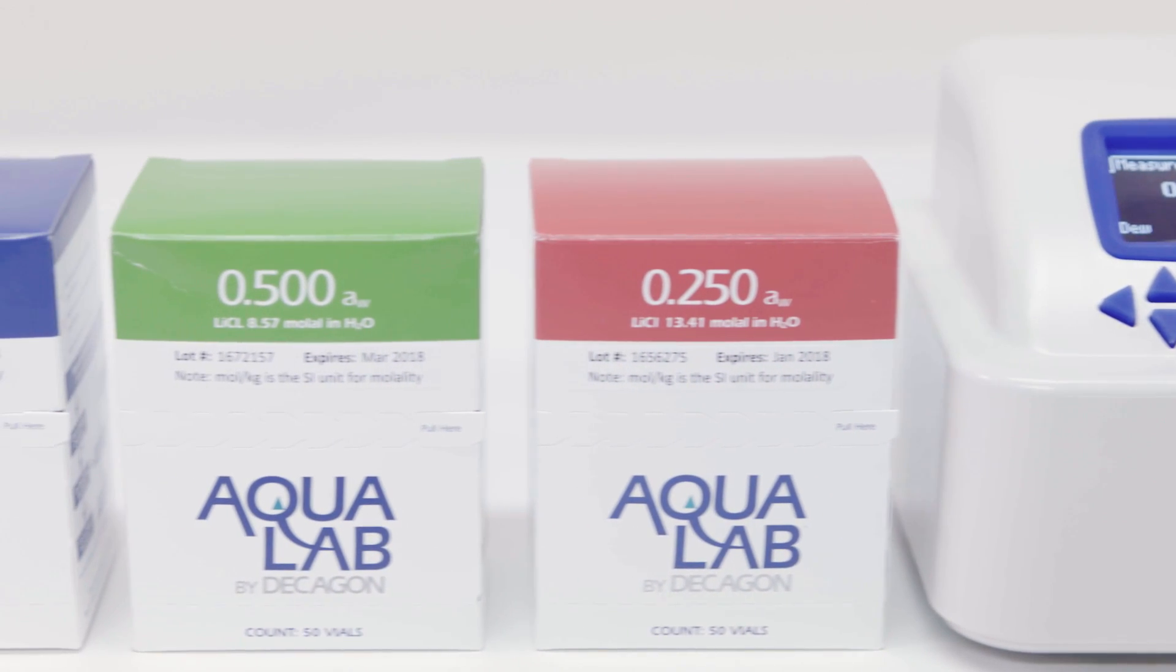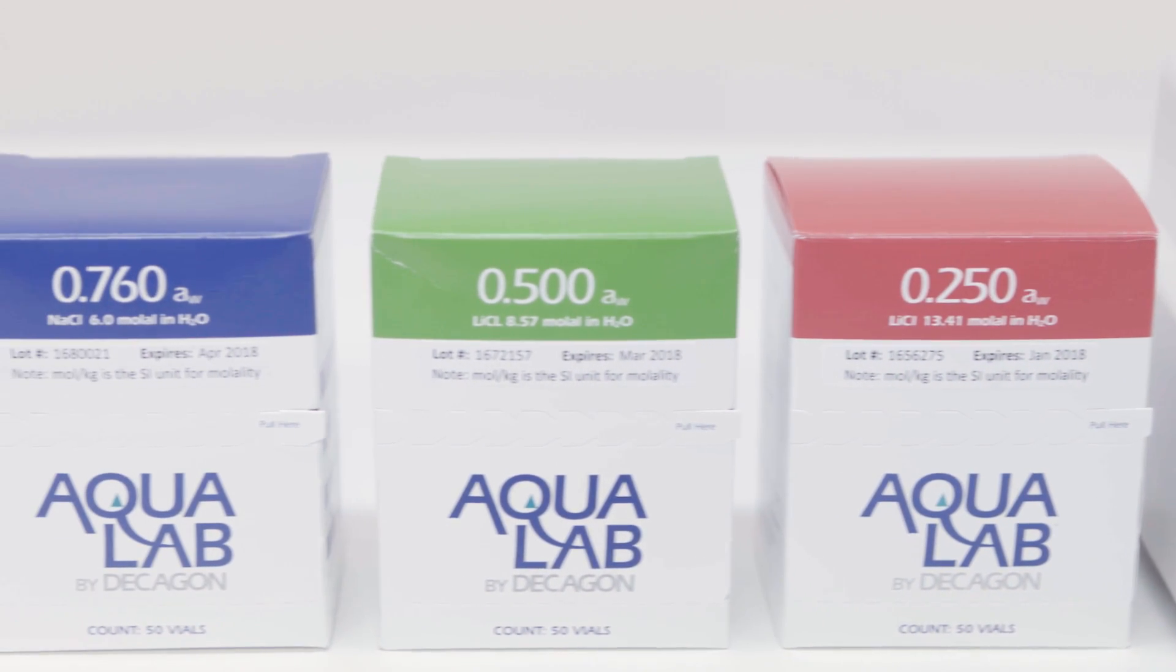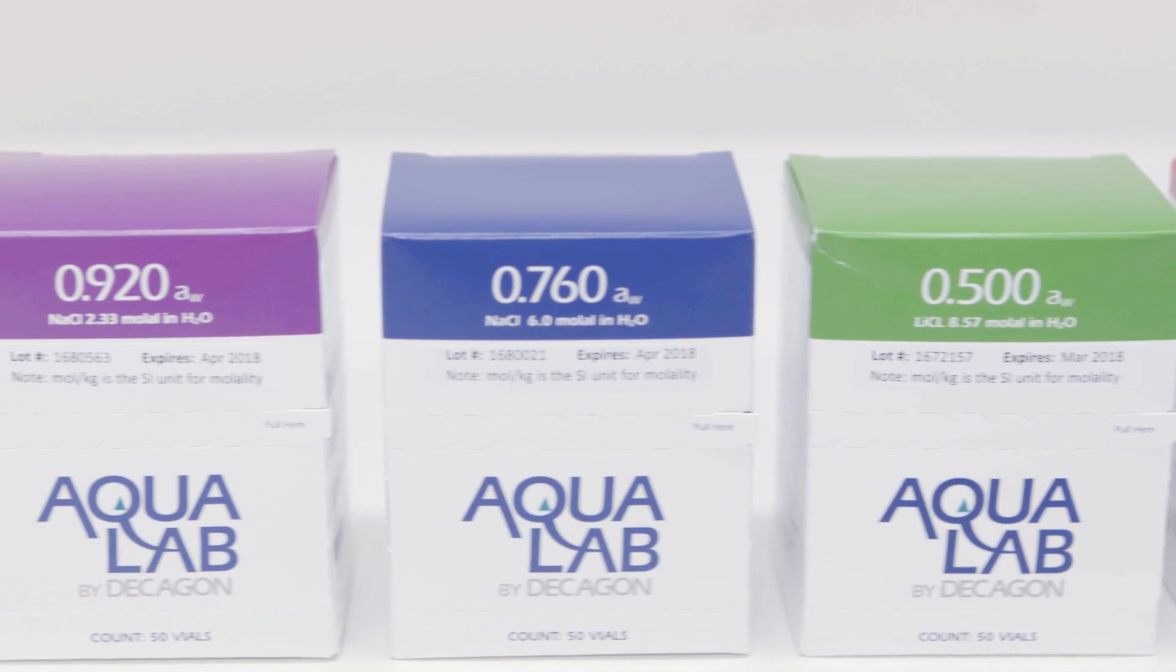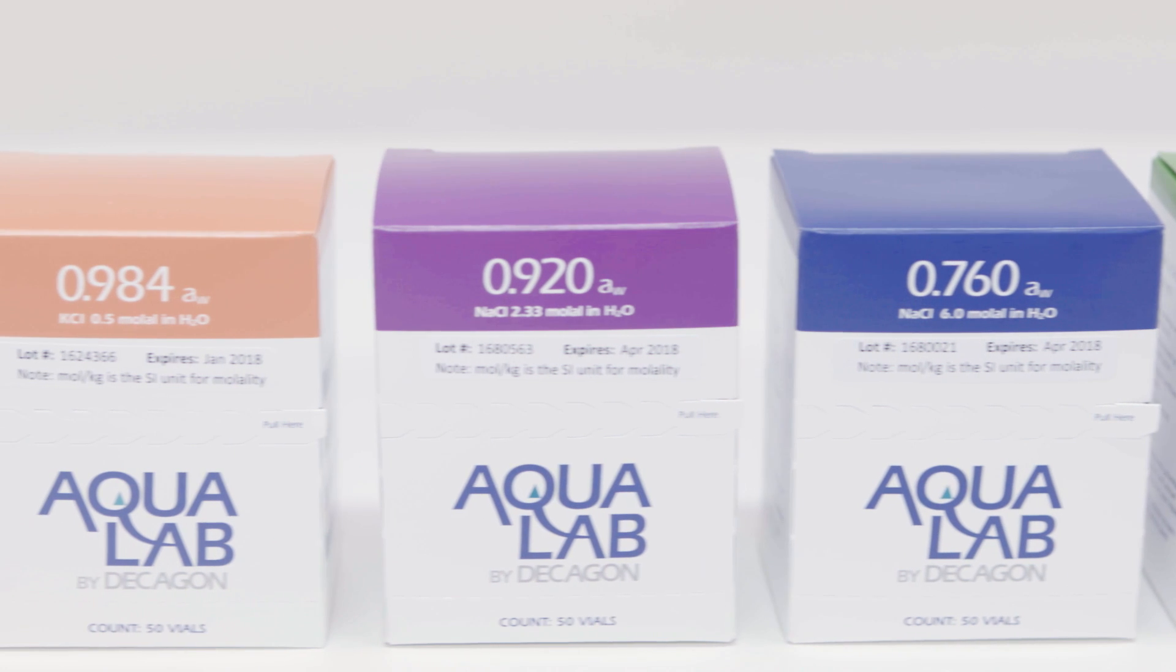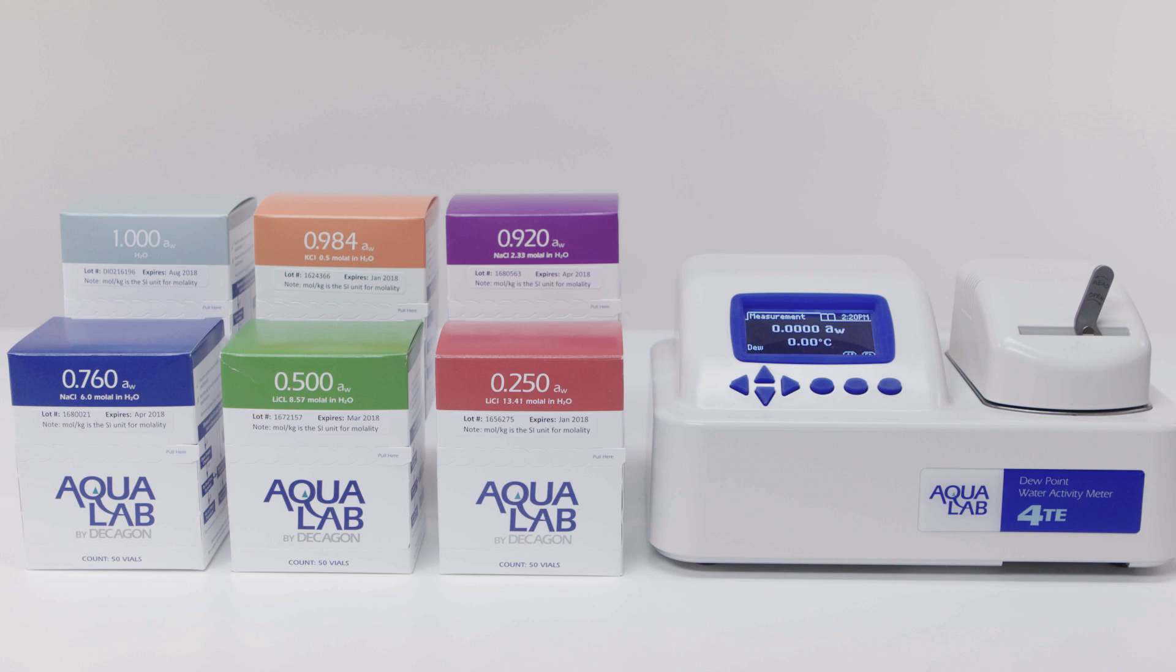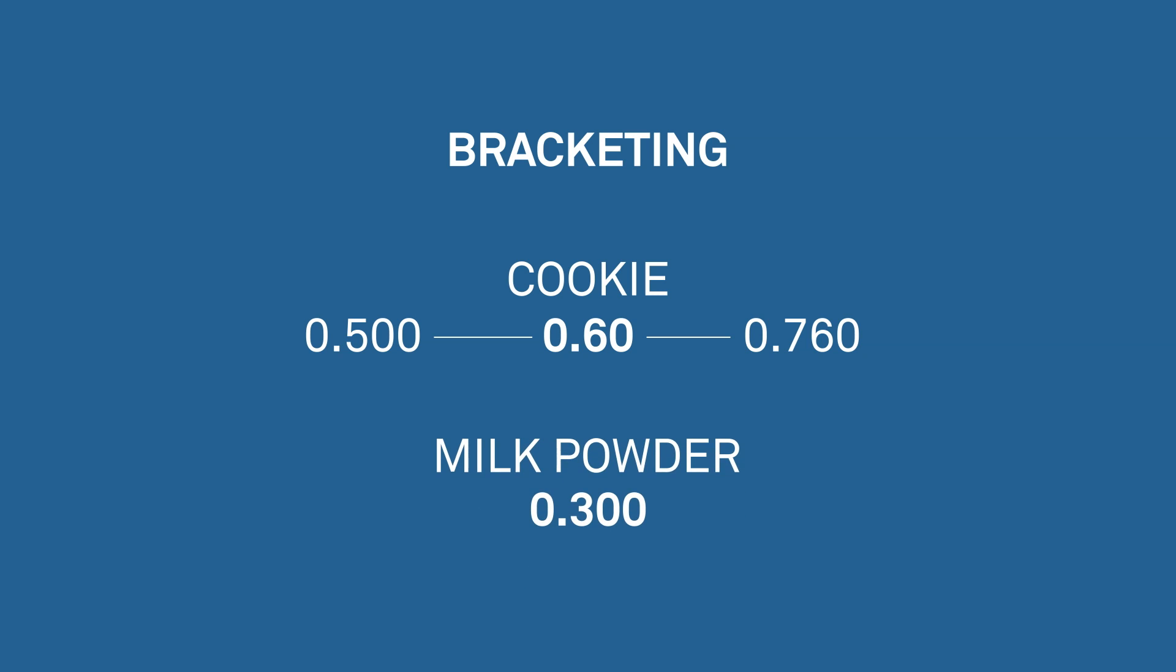There are five verification standards available for your instrument: 0.250, 0.500, 0.760, 0.920, and 0.984. These salt solutions are tested with a densiometer which allows us to know their concentration very accurately. The best way to verify your instrument is to use a technique we call bracketing. If you are measuring a cookie that typically has a water activity of 0.60, you should use the 0.500 and 0.760 standards to verify. If you are measuring milk powder in the 0.3 range, you should use the 0.250 and 0.500 standards to verify.